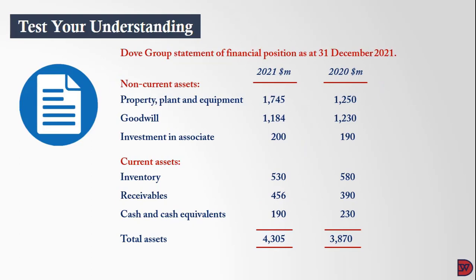The DAF Group statement of financial position as at 31st December 2021 is listed below. We have the non-current assets: property, plant and equipment, goodwill, and investment in associate for both the current and prior year. Current assets include inventory, receivables, and cash and cash equivalents. Total assets are 4 billion 305 million dollars for 2021 and 3 billion 870 million for 2020.